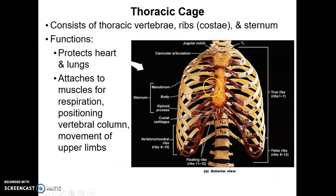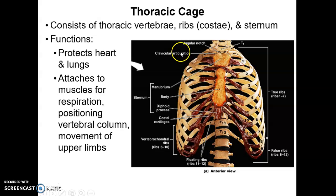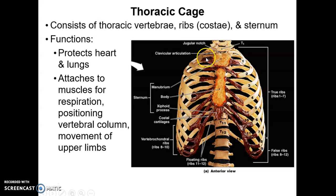Continuing with the importance of the thoracic cage for movement of the upper limbs: the entire upper limb — your arms and shoulder blade — articulates and meets the axial skeleton at one point on the sternum. Your shoulder blade just floats on the back of your rib cage, and your shoulder joint is between your upper arm, the humerus, and the scapula. One reason you can move your arm around so much is because there's only one site of articulation between the upper limb and the sternum of the thoracic cage.